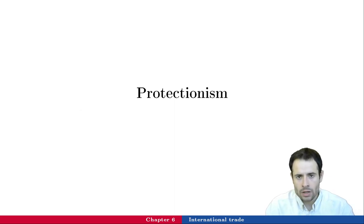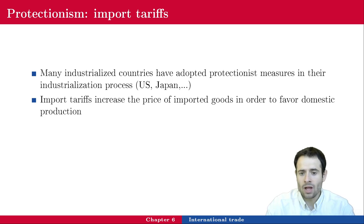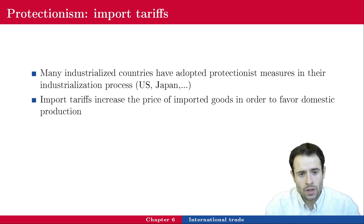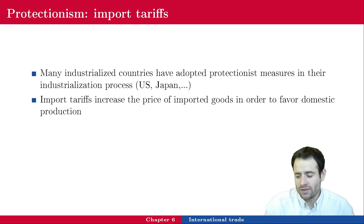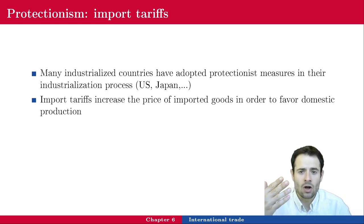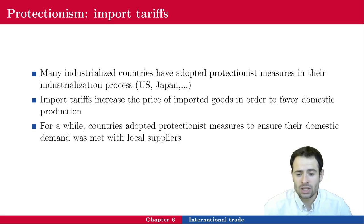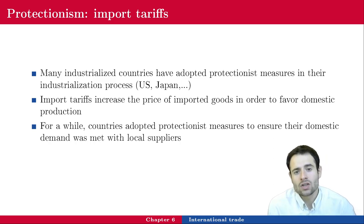Now let's touch on protectionism. There is international trade and free trade, but there are also countries that impose measures to protect their own industries from foreign competition. Many industrialized countries — the US, Japan — have adopted protectionist measures during their industrialization processes, mainly in the form of import tariffs. Every time a citizen wants to buy a good from abroad, they pay an extra tax on top of the price. The idea is to favor domestic production.